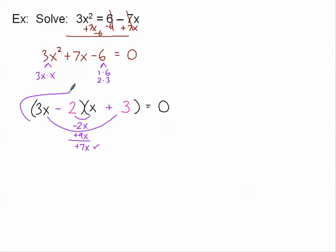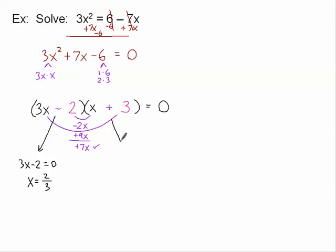I've factored the quadratic. Now I'll solve: 3x minus 2 equals 0 gives x equals 2/3, and x plus 3 equals 0 gives x equals negative 3. Those are our two solutions. To summarize the prerequisites: we need to be able to substitute, eliminate, and solve a quadratic equation — those are the prerequisite skills for this lesson.